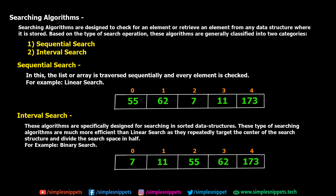Searching algorithms, as the name suggests, are designed to check for or retrieve an element from any data structure. We already know we have many different types of data structures — heap, stack, queue, linked list, and so on. Depending upon what data structure is being used, the searching algorithms also differ in terms of how they operate.